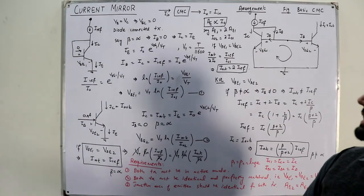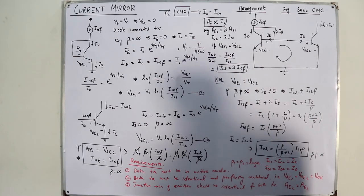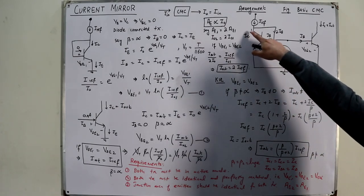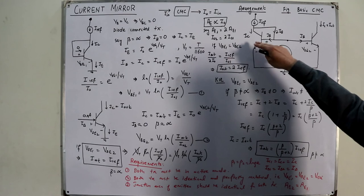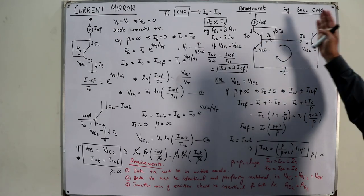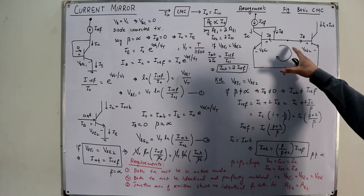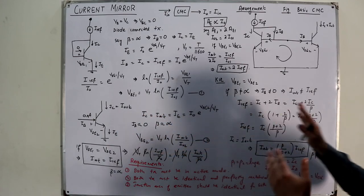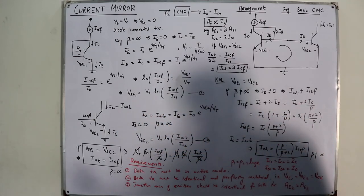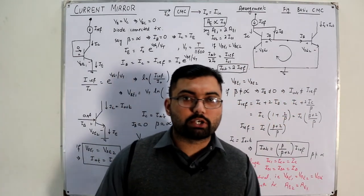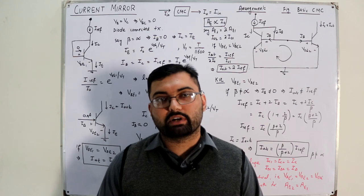I'll finish this video here. In the next video we will talk about more configurations for the current mirror circuit. This basic circuit has the collector-to-base shorted and the bases of the two transistors connected together — the input side and output side with emitters to ground. You now understand the concept. See you in the next one very soon, inshallah. Take care of yourselves and everyone around you. Goodbye.